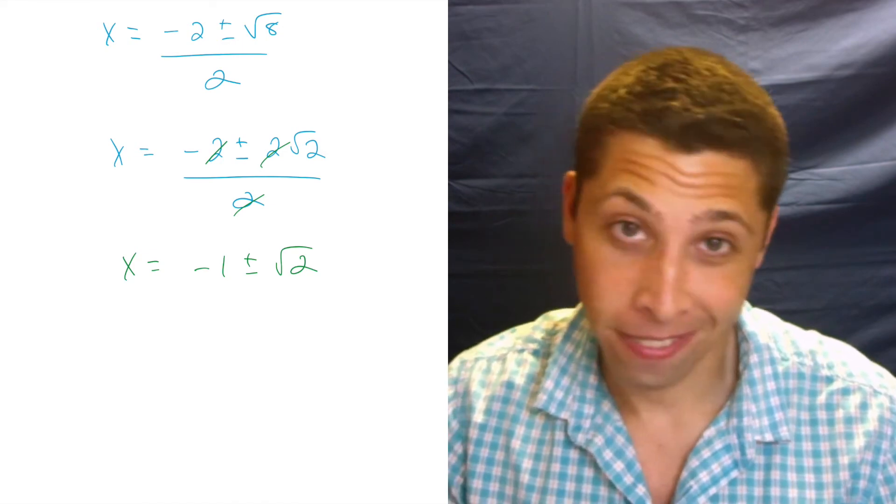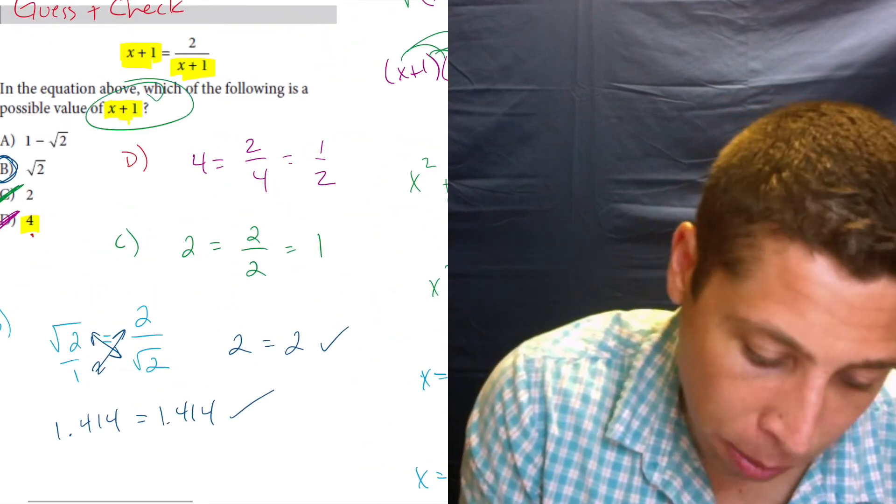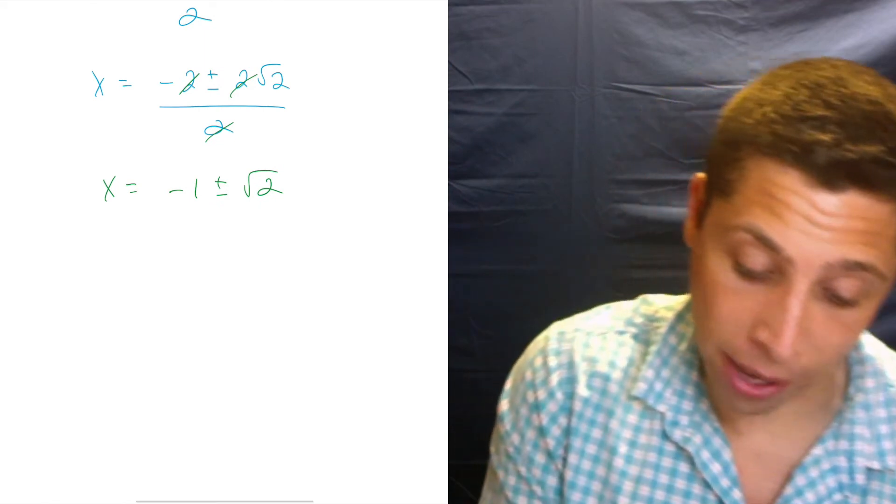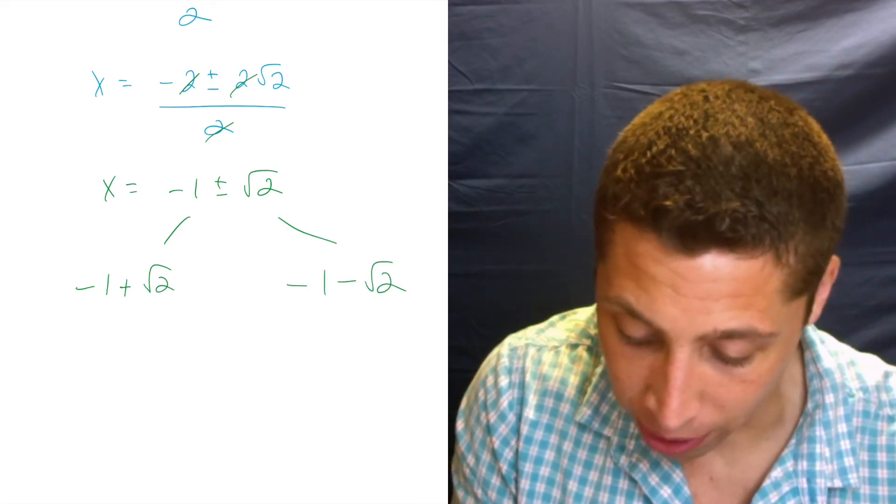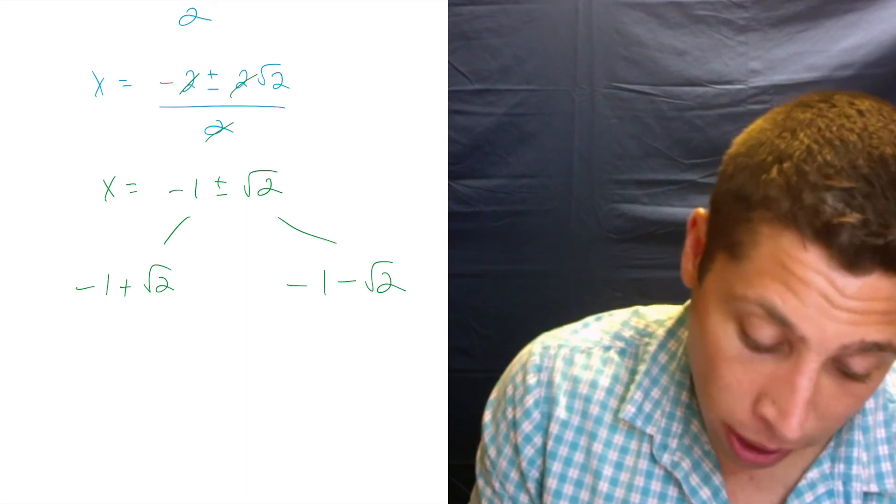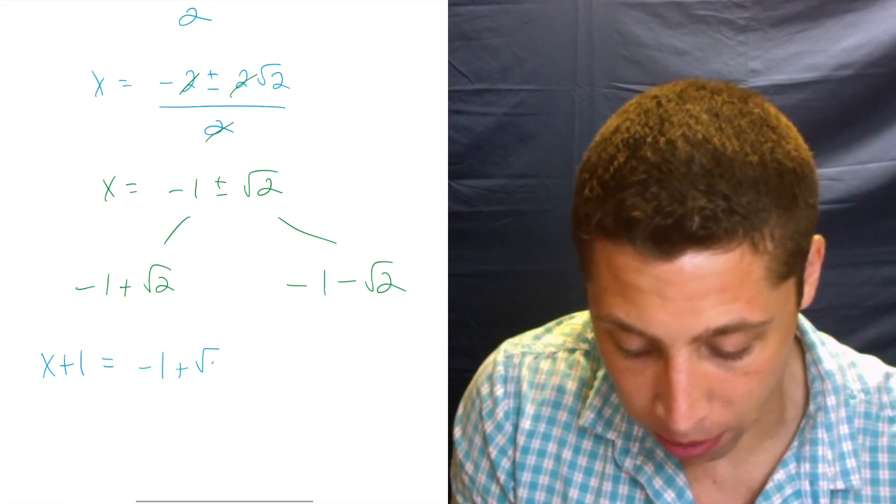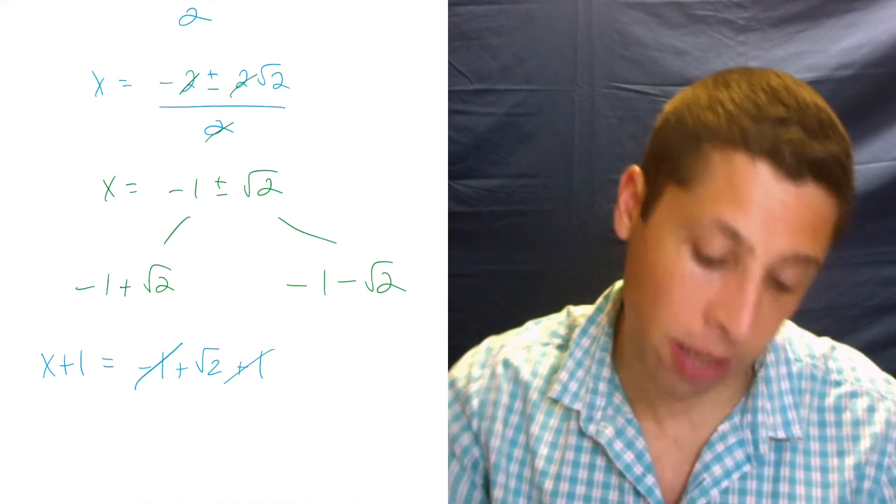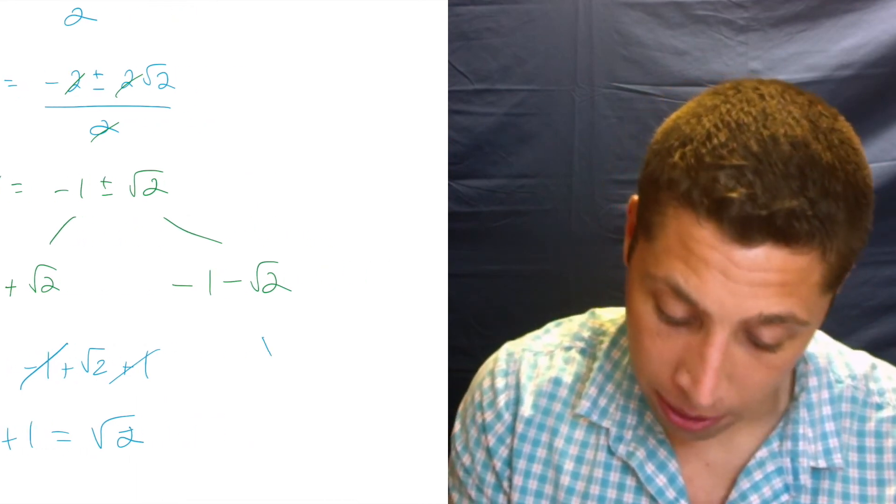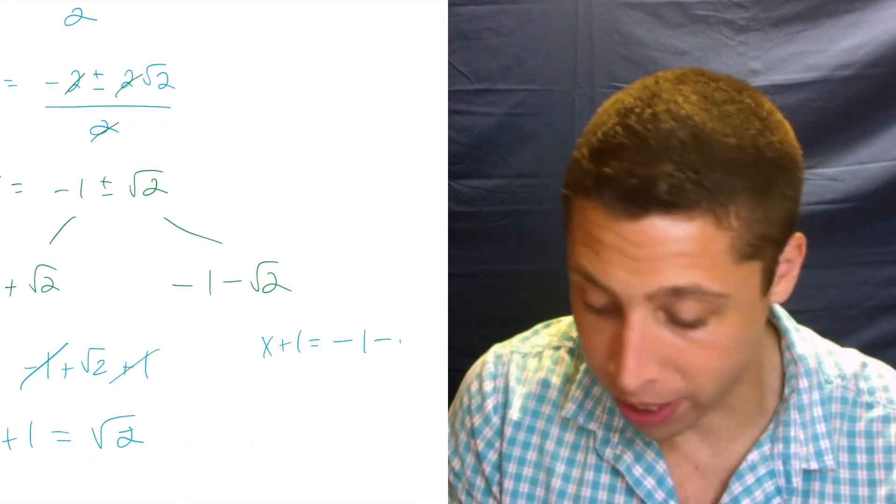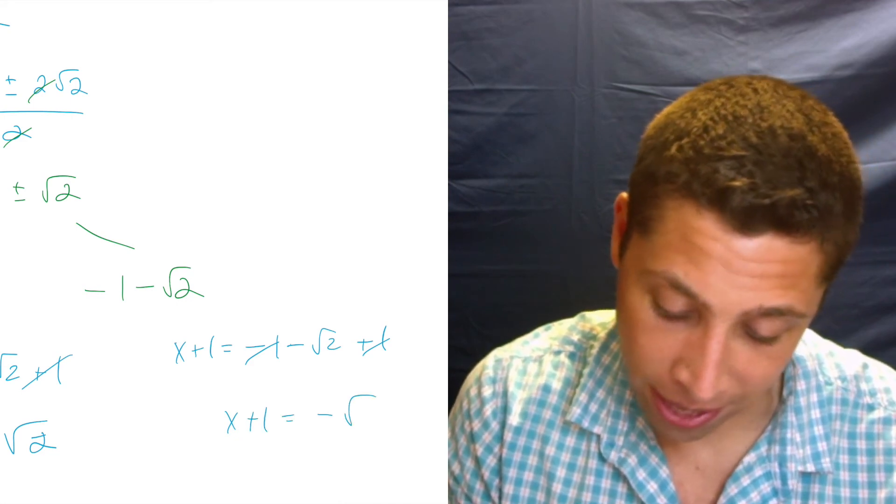So that's a value. But remember, they didn't want X. I already lost all my work. They wanted X plus 1. So now I got to take both of these. This is really two values. This is negative 1 plus radical 2 and negative 1 minus radical 2. And I got to add 1 to both because if I want to get X plus 1, I've got to do negative 1 plus radical 2 plus 1, which cancels out the negative 1 with the positive 1 and gets me X plus 1 is equal to radical 2.